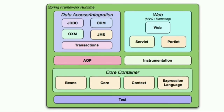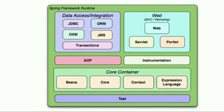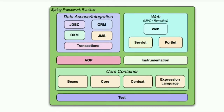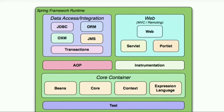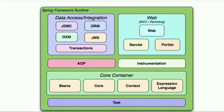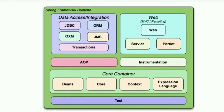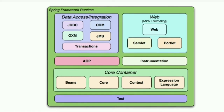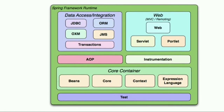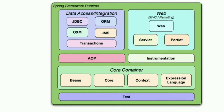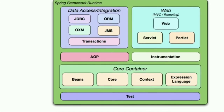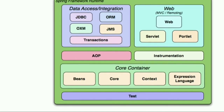The next module is JMS — Java Messaging Service. It is used for asynchronous messaging. The next module is Transactions, which supports Programmatic Transactions and Declarative Transactions for database operations.